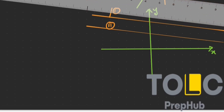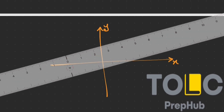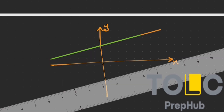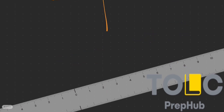The third option is infinite solutions. Let's draw another graph with x and y axes. If two lines just overlap each other — the first line and the second line represent exactly the same line — in this case they have infinite solutions. So these are the three kinds of solutions that can be found from a system of equations.